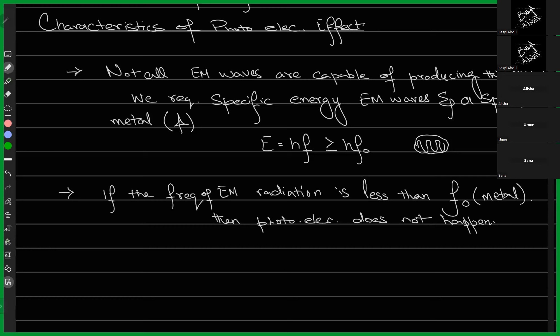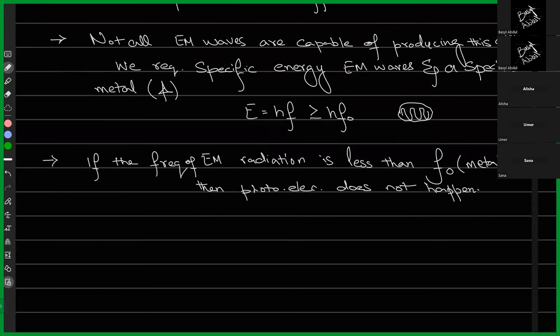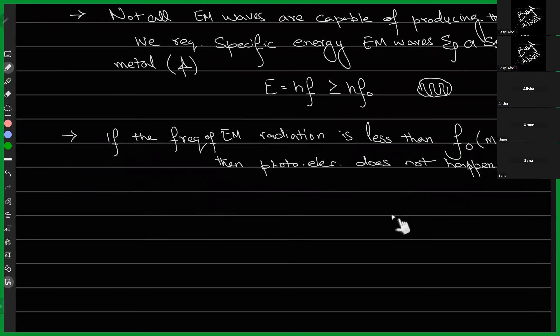Let's use this point to explain how the effect works. Suppose this is a metal, and on its surface are electrons. You take a photon — an electromagnetic wave — and you hit the metallic surface with it. How is the electron emitted? Can you take a guess at how this setup is capable of removing an electron from the surface?